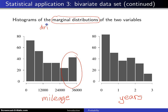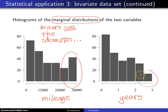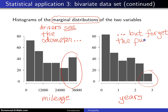That spike tells you that drivers are looking at their odometer and seeing it approach 36,000 miles. But the fact that you don't have a similar spike on the time histogram is also saying that those same drivers who are watching their odometers forget the purchase date. So that's a bivariate data set where you can see a little bit of intuition between when those warranty claims occur by looking at the bivariate data pairs.